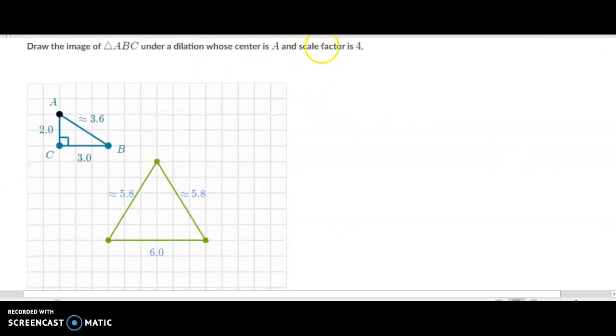For instance, here we have a scale factor of four. So this triangle, it says we're going to draw the image of ABC. So this is ABC. It's a triangle that we started with. But now we're going to make it bigger, and the distance is going to increase by four. So A is already zero away from A. A is the center of dilation. So A stays there.